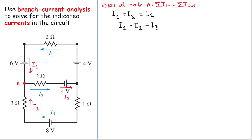You could also do KCL at node B, but you would get the same result: i2 goes in, i1 goes out through one battery, and i3 goes down through the other battery, giving i2 equals i1 plus i3 — which is redundant. So we need another equation and will use KVL.